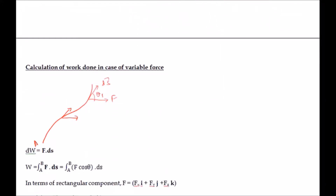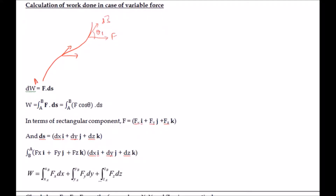Now we learn the calculation of work done in the case of variable force in detail. At any point, considering a small displacement ds and a force making angle θ with this displacement, the infinitesimal work is dW = F·ds. The net work done is the integration of dW from A to B, equal to ∫F·cosθ·ds.